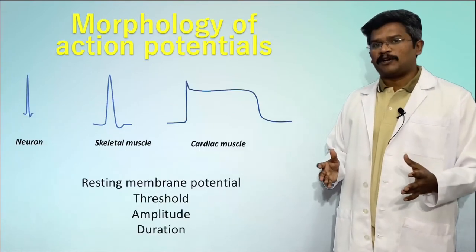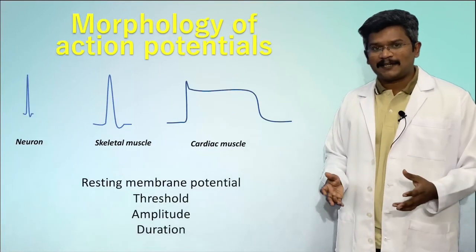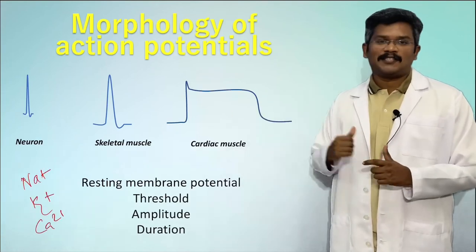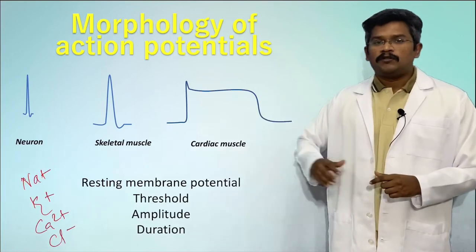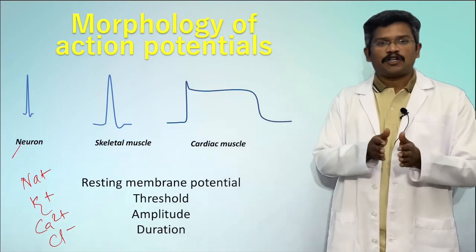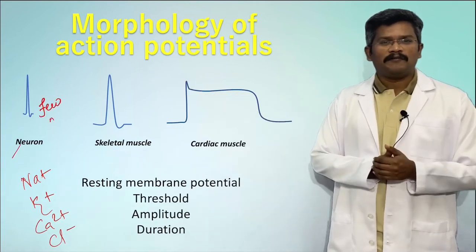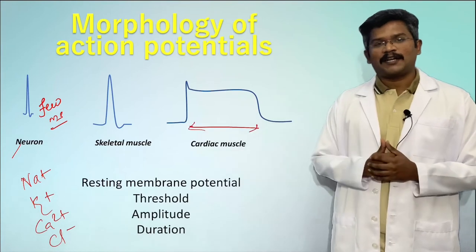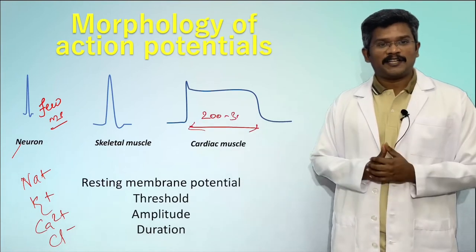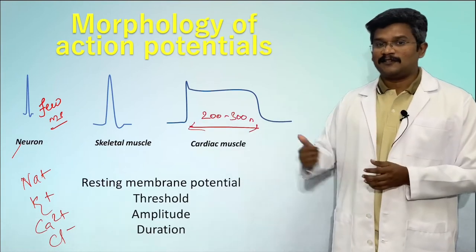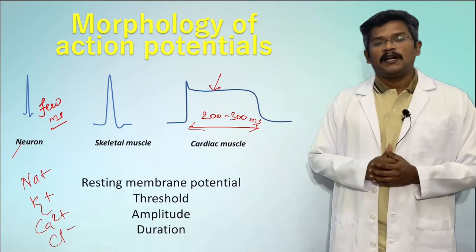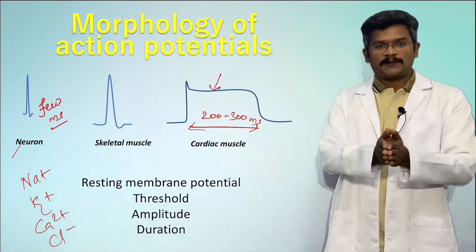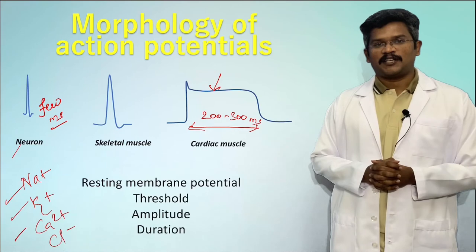The morphology of an action potential is decided by the type and number of ion channels present in a given cell. For example, a neuron has a very short action potential lasting only a few milliseconds, whereas a cardiac muscle action potential lasts 200 to 300 milliseconds and also has a plateau. These properties are decided by the presence of specific types of voltage-gated ion channels.